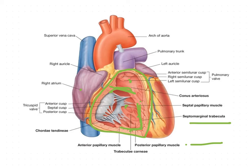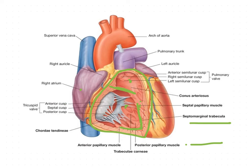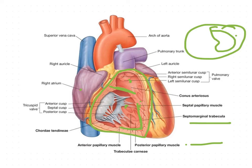The cavity of the right ventricle is crescent-shaped in transverse section because of the forward bulge of the interventricular septum. This forward bulge causes the cavity to appear as a crescent shape when viewed in cross-section.